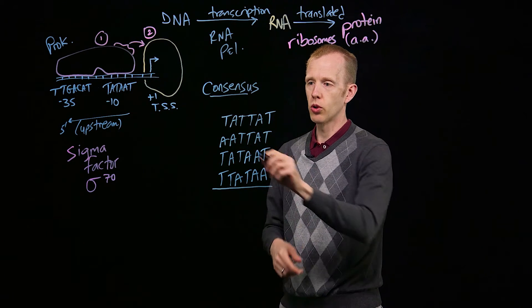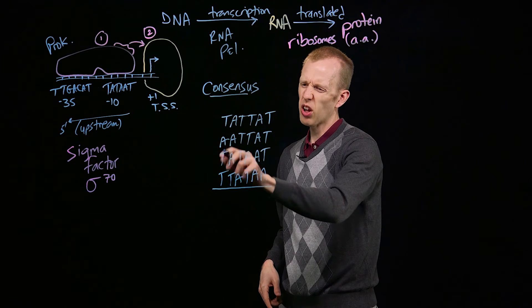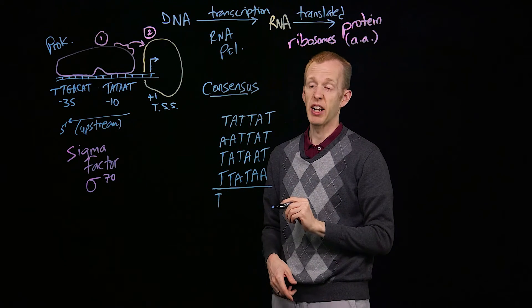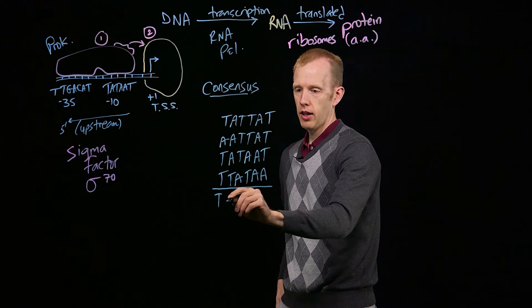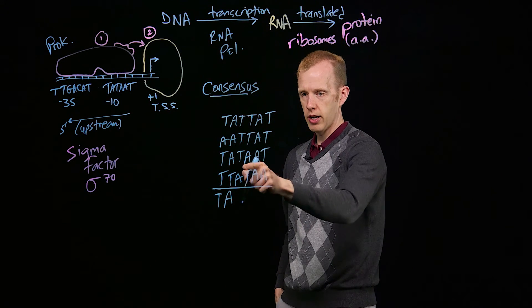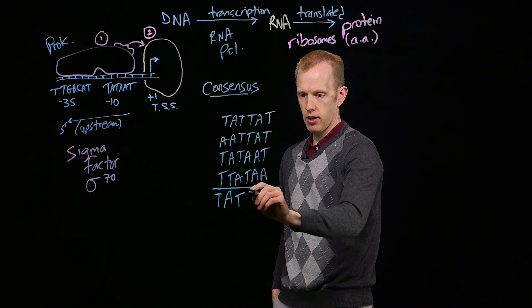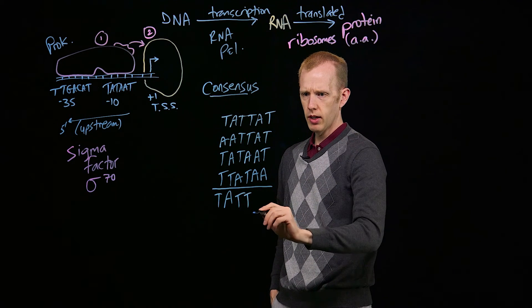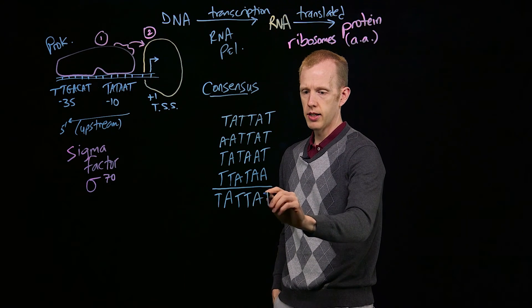So, what you do is, you look at every column, and you say, well, on average, most sigma factors bind T at that position. And three out of four, A there, and three out of four, a T there, and a T there, and an A there, and a T there.